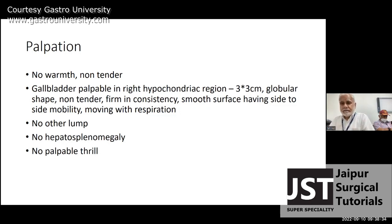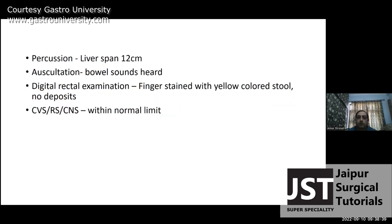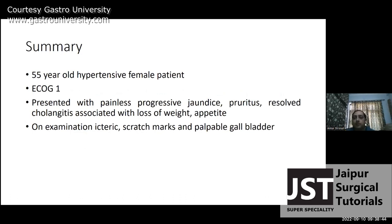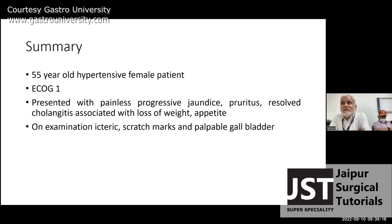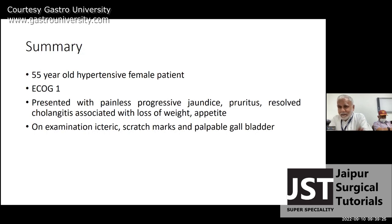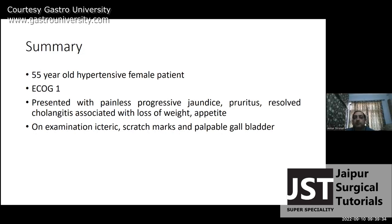Differential diagnosis: first, peri-ampullary carcinoma; second, carcinoma head of pancreas. On history and examination alone you cannot differentiate which type of peri-ampullary carcinoma it is, except if there is a history of melena — then you can say it is likely a papillary or duodenal carcinoma. If there is no history of melena, you cannot differentiate, and sometimes even on imaging it may not be possible.